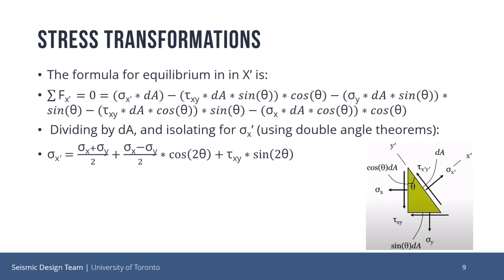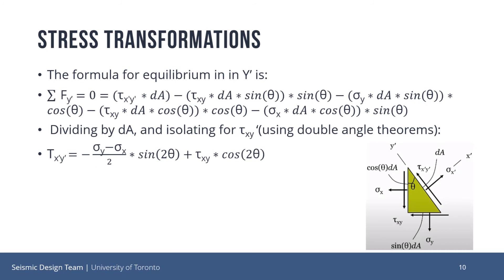First, we may solve for equilibrium in the x-prime axis. This will allow us to solve for sigma x-prime. We break down each stress into components along the x-prime and y-prime axes and multiply them over the area in which they act. Notice how only tau xy-prime is not present, as it has no component on the x-prime axis. After dividing by dA and isolating for sigma x-prime using double angle theorems, this gives sigma x-prime is equal to (sigma x plus sigma y) divided by 2, plus (sigma x minus sigma y) divided by 2 multiplied by cos 2 theta, plus tau xy multiplied by sin 2 theta. Next, we may solve for equilibrium in the y-prime axis, which will allow us to solve for tau xy-prime. Notice how only sigma x-prime is not present, as there is no component in the y-prime direction. After simplifying, tau xy-prime is equal to (sigma y minus sigma x) over 2 multiplied by sin 2 theta, plus tau xy multiplied by cos 2 theta.